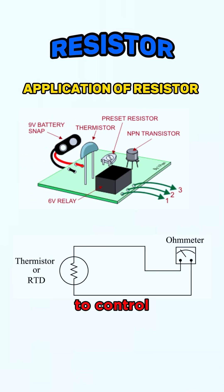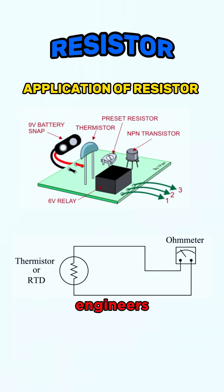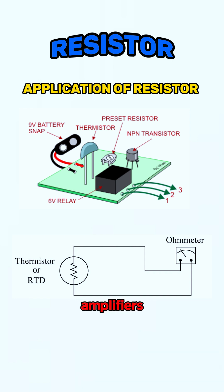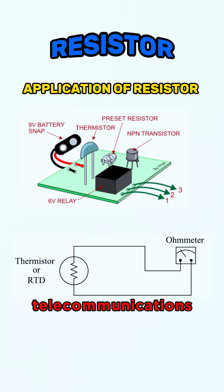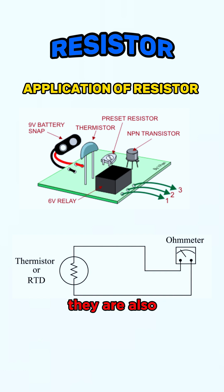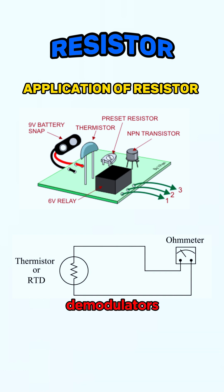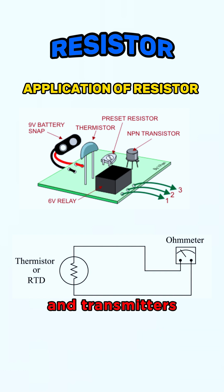Engineers use resistors to control temperature and in voltmeters. Engineers also use resistors in digital multimeters, amplifiers, telecommunications, and oscillators. They are also used in modulators, demodulators, and transmitters.